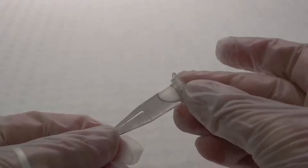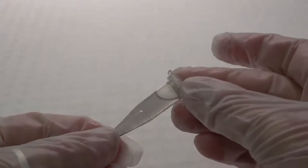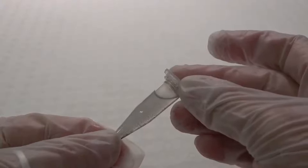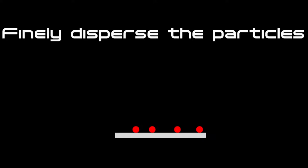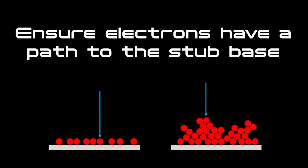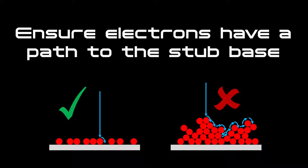The technique described here can also be used to prepare fine non-nanopowdered samples in suspension for SEM examination. When mounting nanoparticle samples for SEM, our main goal is to create as thin a dispersal of particles across areas of the substrate as possible. This allows the particles to adhere to the substrate and ensures that the negative charge generated by the electron beam has a pathway away from the surface of the particles to the substrate.